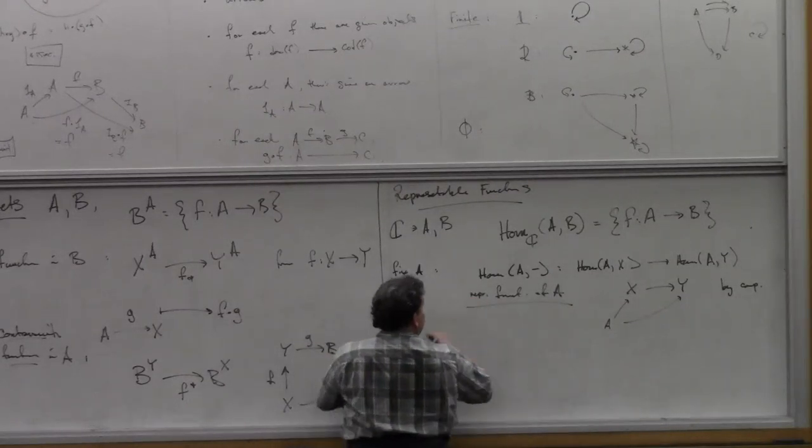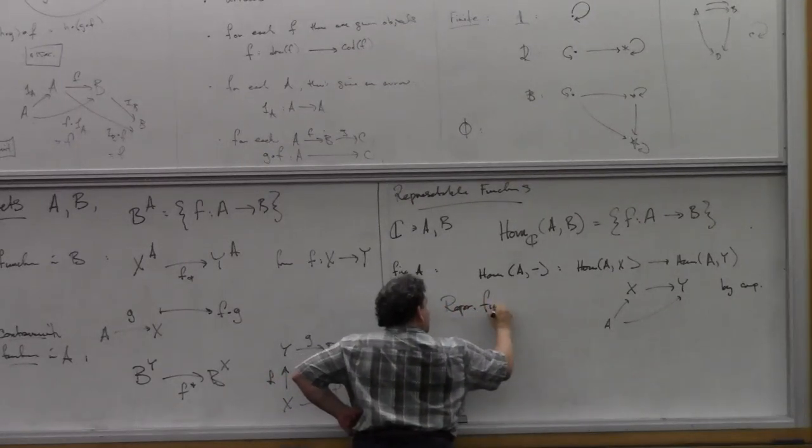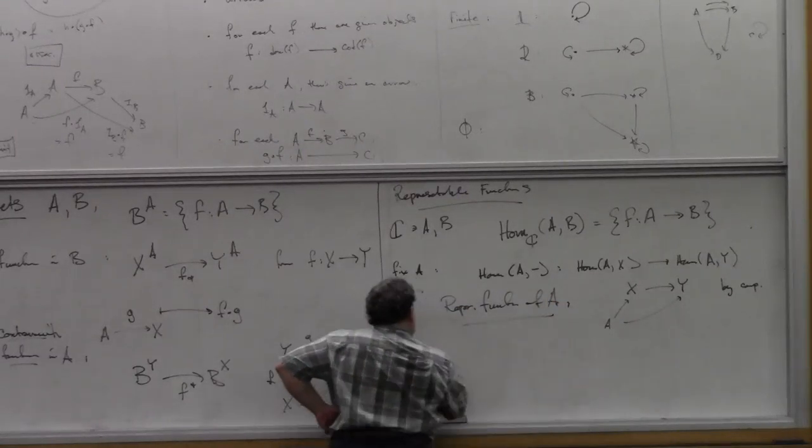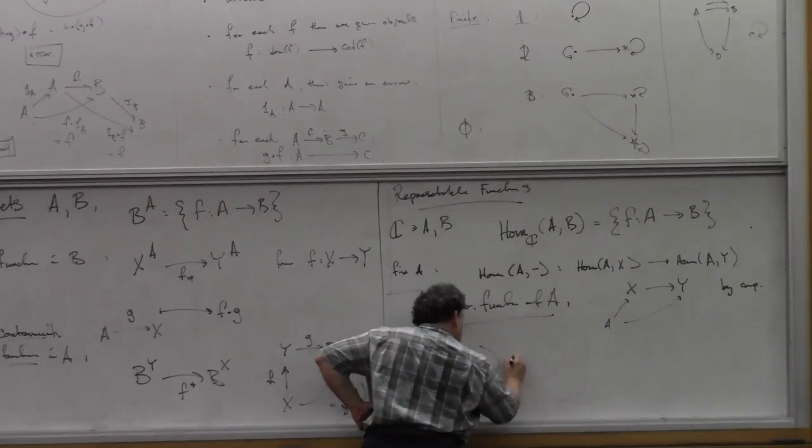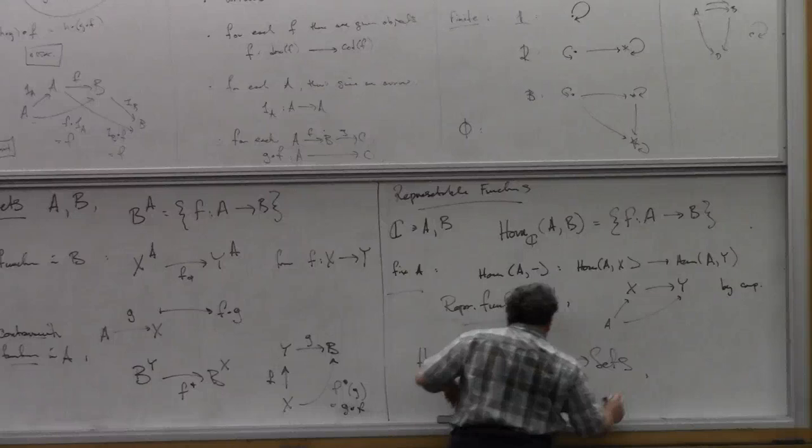The representable functor of A, and I want to emphasize this, is HOM(A,-). It goes from C into the category of sets, right?